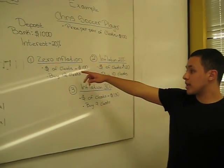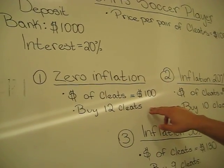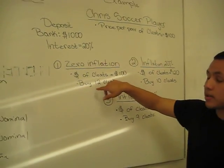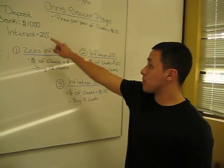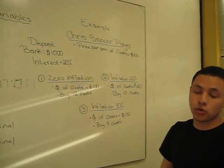All right, with zero inflation, the cleats stay at a price of $100, in which he can buy 12 cleats. Because throughout the year, with the 20% interest rate, the amount he has in the bank increases to $1,200.